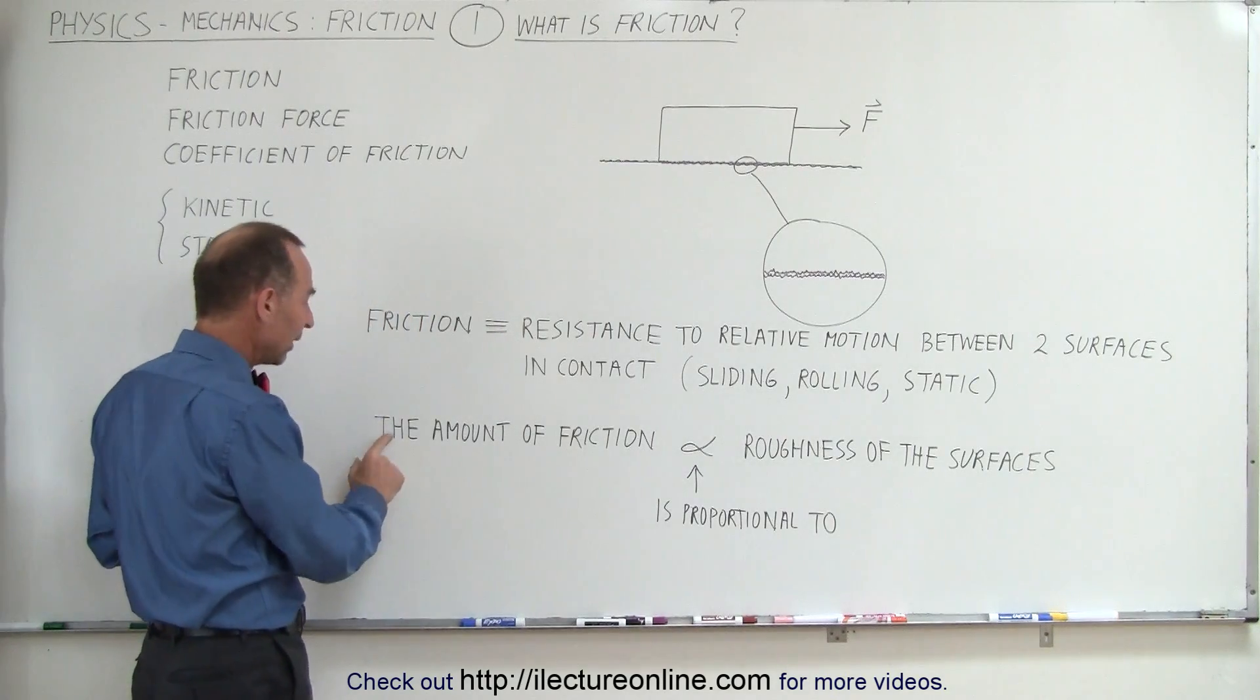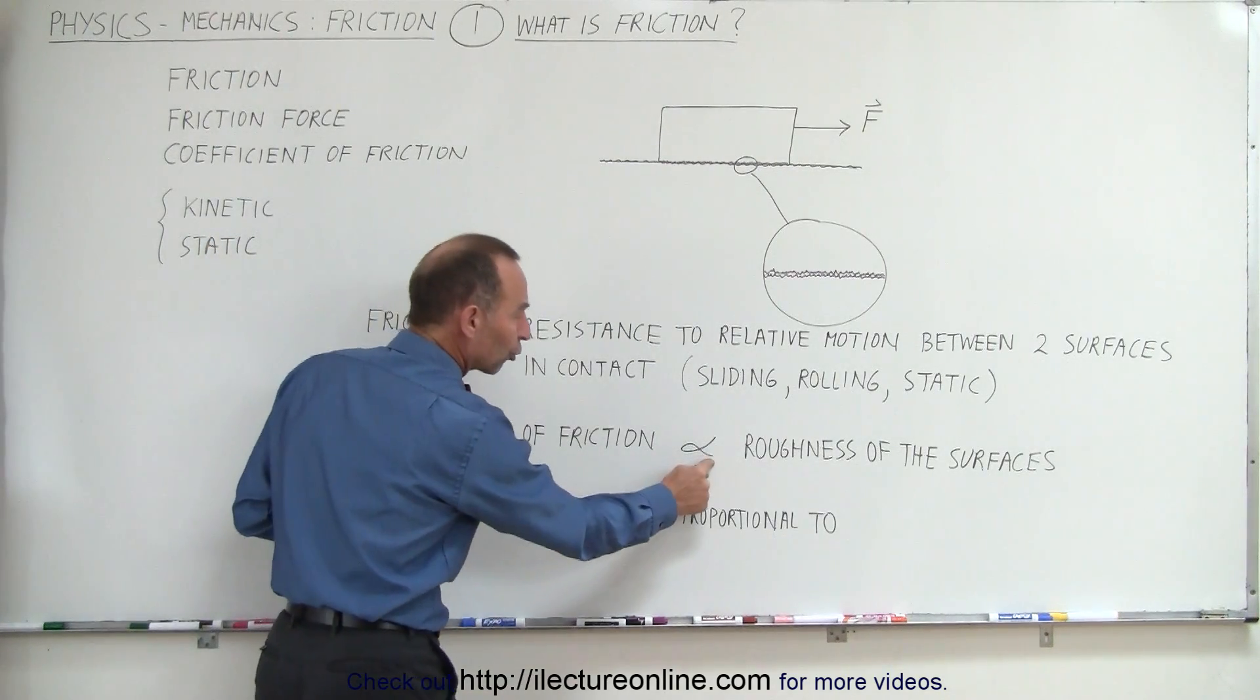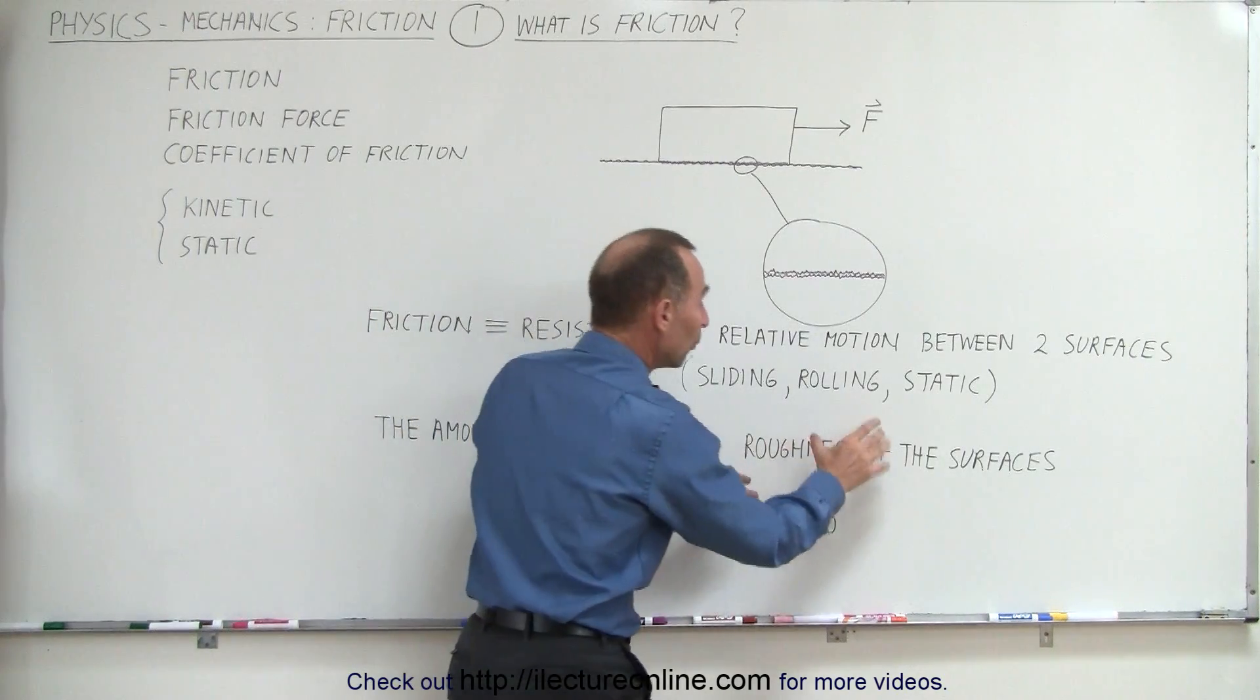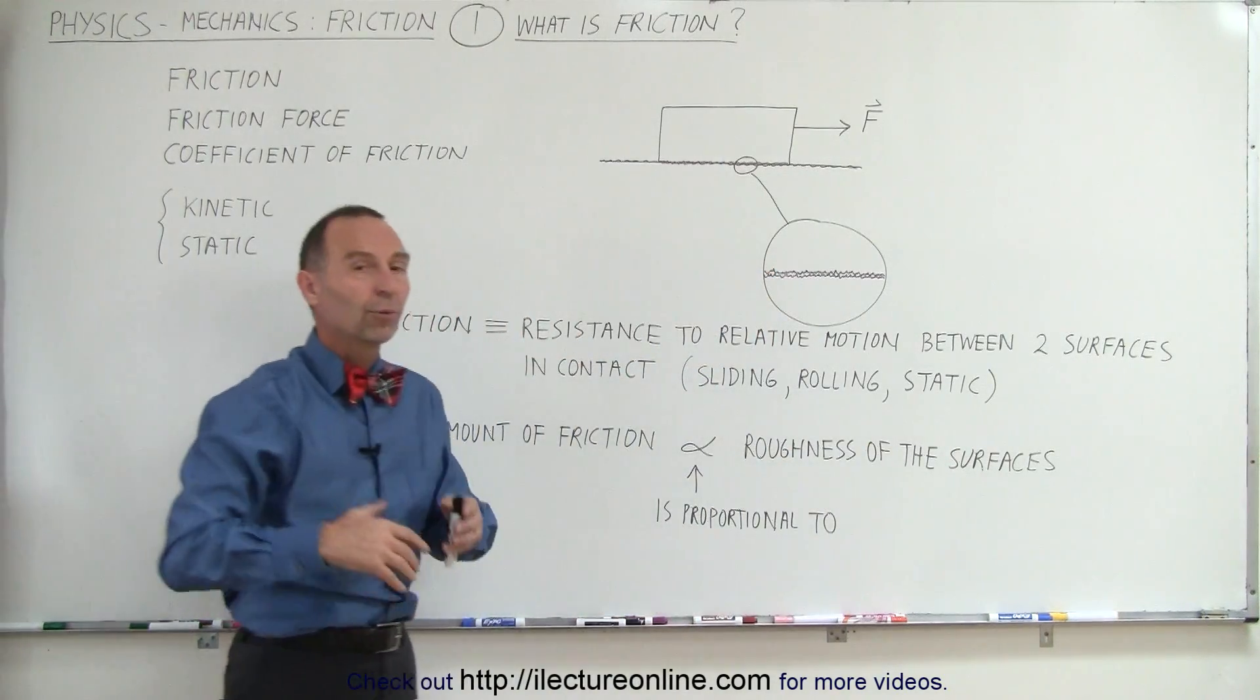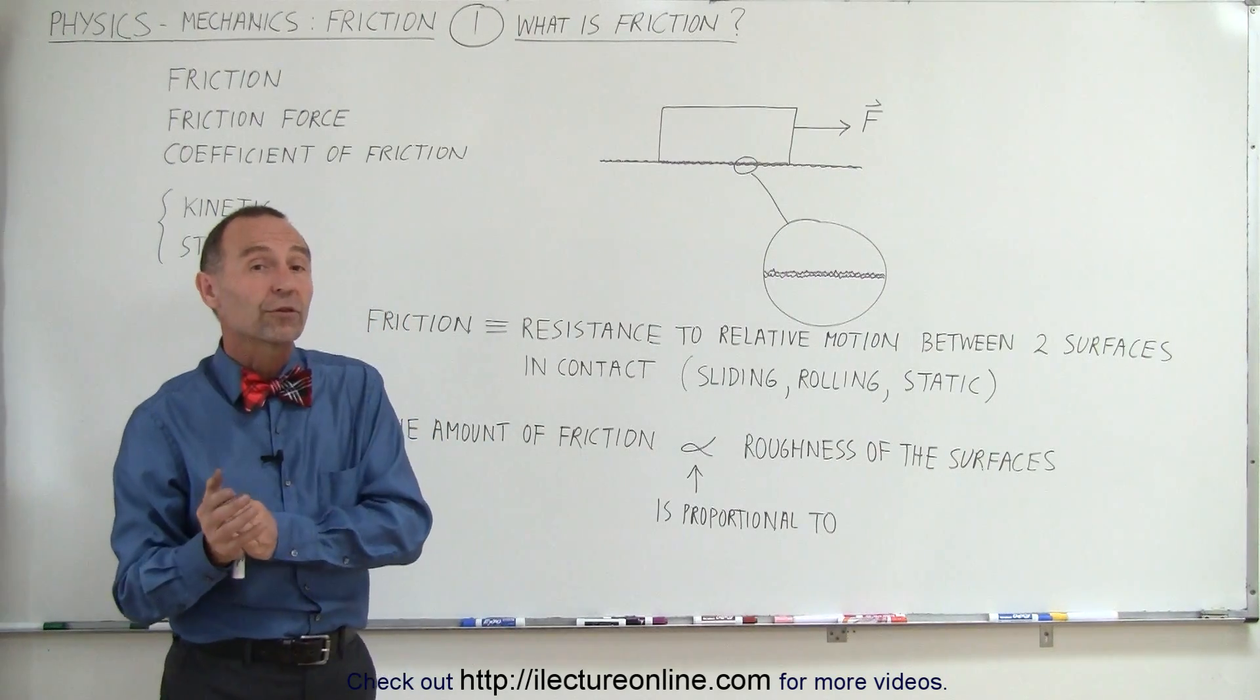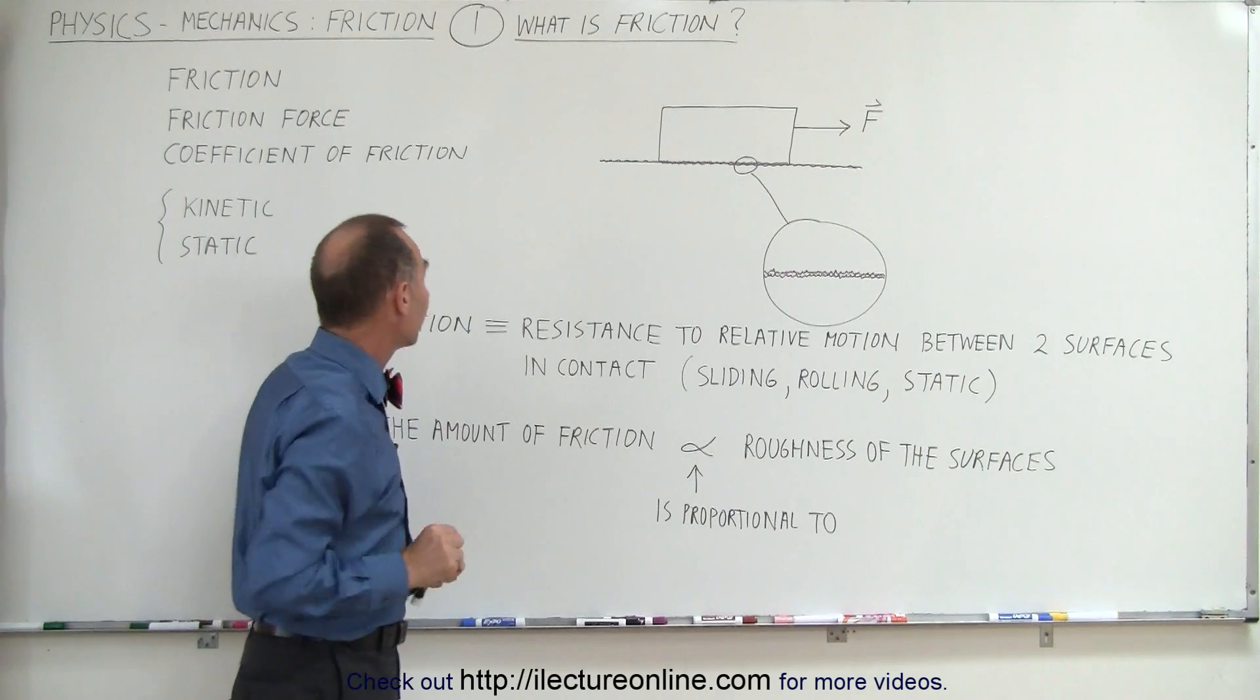Now notice we can say that the amount of friction is proportional to—and that's what that symbol means—it's proportional to the roughness of the surfaces. The rougher the surfaces, the greater the friction. The smoother the surfaces, the smaller the friction.